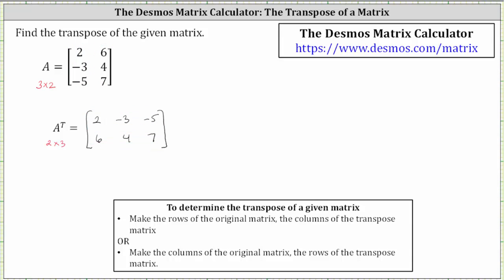Or it's also true that row one in matrix A becomes column one in A transpose. Row two in matrix A becomes column two in A transpose. And row three in matrix A becomes column three in A transpose.